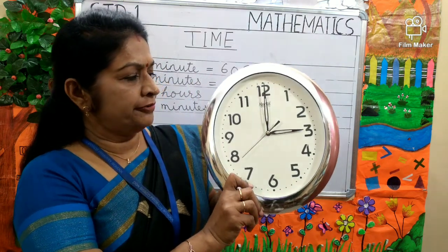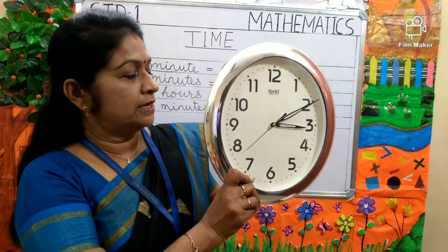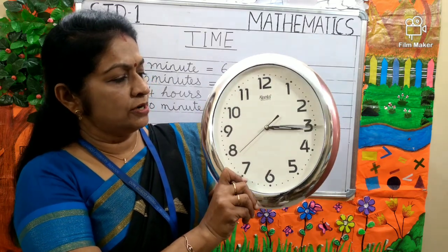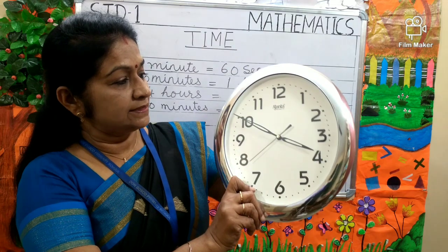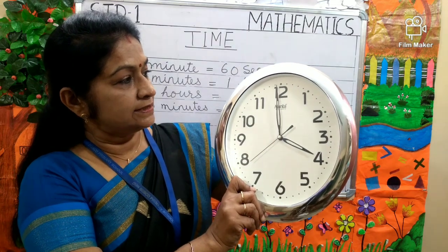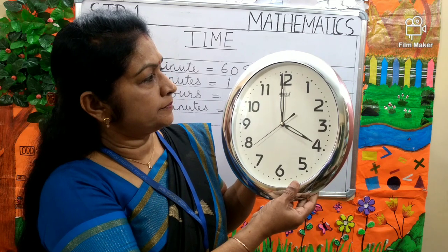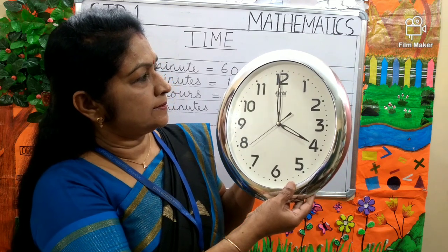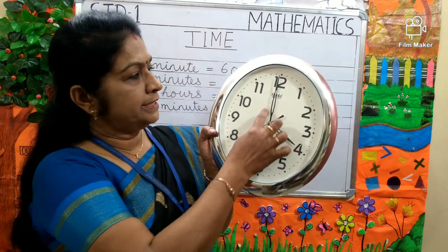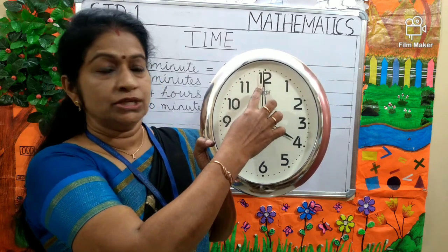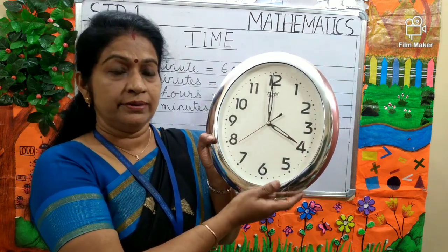Now I am moving the minute hand round the clock. It is now the hour hand is on 4 and the minute hand is on 12. So the time is 4 o'clock.